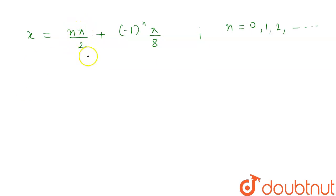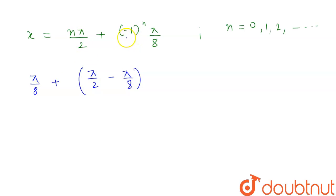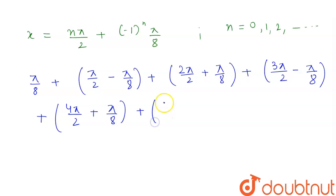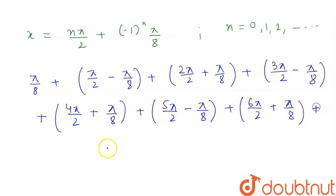Putting n = 0: x = π/8. Putting n = 1: x = π/2 − π/8. Putting n = 2: x = 2π/2 + π/8. Putting n = 3: x = 3π/2 − π/8. Putting n = 4: x = 4π/2 + π/8. Putting n = 5: x = 5π/2 − π/8. Putting n = 6: x = 6π/2 + π/8. Putting n = 7: x = 7π/2 − π/8.